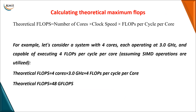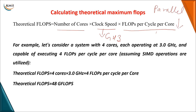For theoretical calculation of maximum floating point operations, the formula is: number of cores multiplied by clock speed (in GHz) multiplied by the number of FLOPs per cycle per core. Since we are dealing with parallel processing, we use processors with multiple cores, and each core is capable of performing operations. For example, with four cores each operating at 3.0 GHz and four FLOPs per cycle per core, multiplying all values gives the number of theoretical FLOPs a machine can execute.